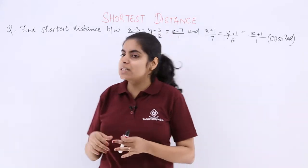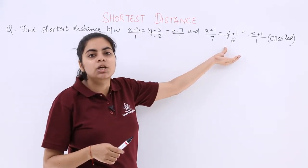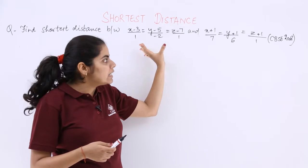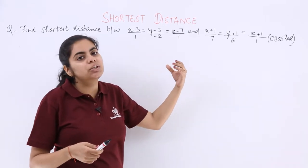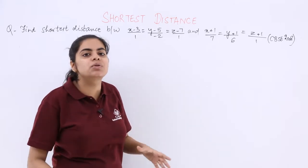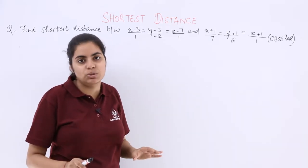Now find the shortest distance between these two lines—CBSE 2008 paper question. So the main step that you have to do is, first convert it into vector form, then follow the same procedure as we followed in the previous question.